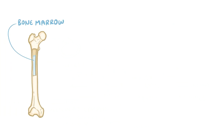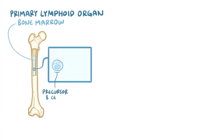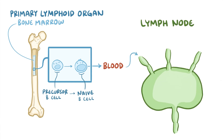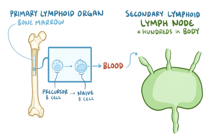Now, B cell development starts in the bone marrow, which is a primary lymphoid organ. That's where young precursor B cells mature into naive B cells. The naive B cells then leave the bone marrow and circulate in the blood and eventually settle down in the lymph nodes. Humans have hundreds of lymph nodes, scattered throughout the body, and they're considered secondary lymphoid organs.